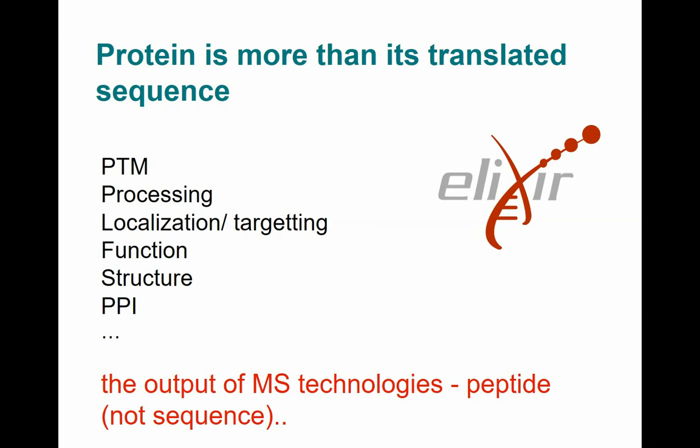PTM, processing - a protein that is a real entity in the cell may only work after its first 25 amino acids are cleaved. You cannot get this just by doing sequence alignment. You need an expert system that tells you all these annotations: localization, targeting, function, structure, protein-protein interaction, and many more. A lot of this type of information doesn't come from the machines we talked about so much, like NGS and everything we discussed. They do not come from that - it's zero information from that.